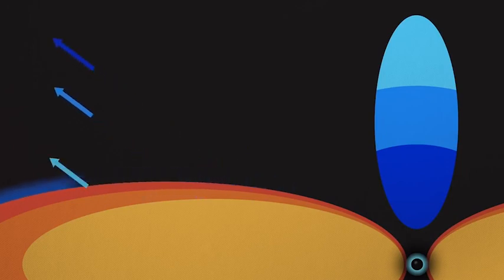Iron atoms in the disk absorb X-rays from the corona and then re-emit them. Gravitational distortion of space-time stretches the wavelengths of the X-rays, reducing their energy. The farther from the black hole they are, the less the light is affected.